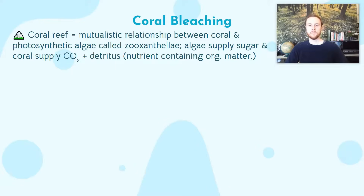It's a really beneficial relationship where the algae supply sugar — the primary energy source for the coral — and the coral supply carbon dioxide through respiration, which the algae use for photosynthesis. The coral also supply detritus, which is partially broken down dead organic matter providing nutrients the algae need. The algae are what give the coral reef its color; their presence in these little coral spaces gives the reef all of its unique colors.